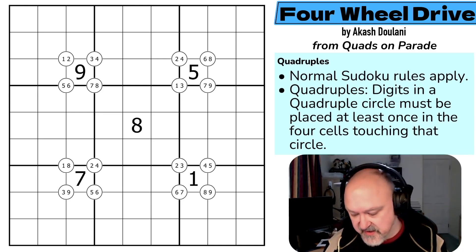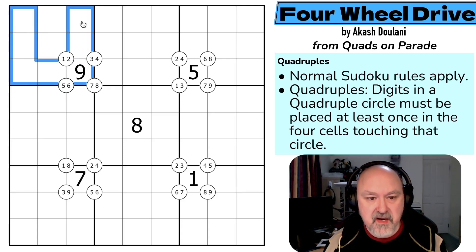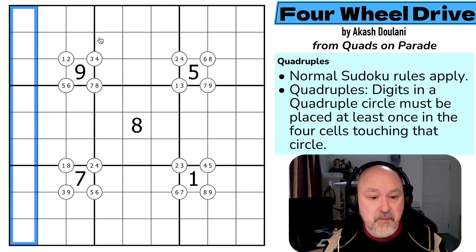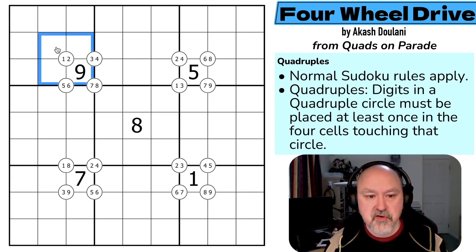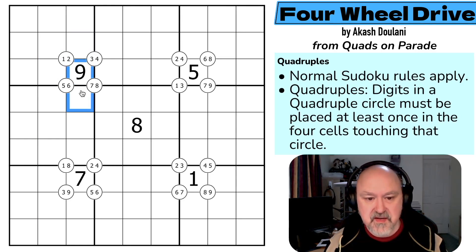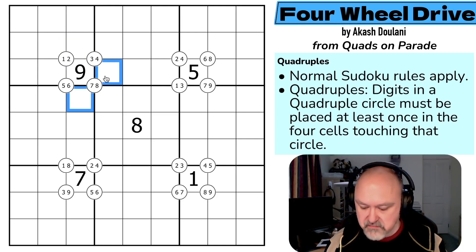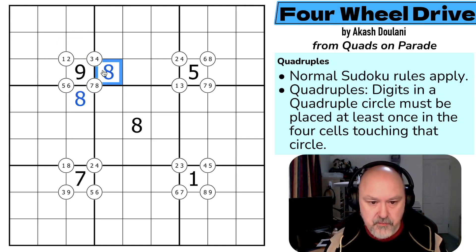This one is just using the quadruples constraint, and it's really great to have Akash contributing to the pack. Normal Sudoku rules apply: in every box, every row, and every column the digits one to nine must be placed without repetition. Then we've got quadruple circles — digits in a quadruple circle must be placed at least once in the four cells touching that circle. For example there must be a one and a two in those four cells, and at least one seven and one eight in those four cells. It might be possible to put two eights there — that would be legal, as long as there's at least one eight.